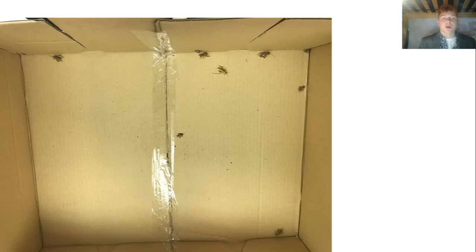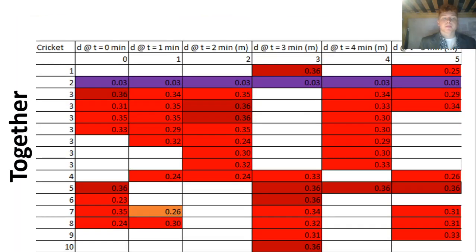I then did the same thing with all the crickets together in a group, and here I collected similar data. Crickets tend to stay towards the walls. I'd like to point out that there is an outlier here, that cricket number two, however that cricket had a deficiency and did not move at all.